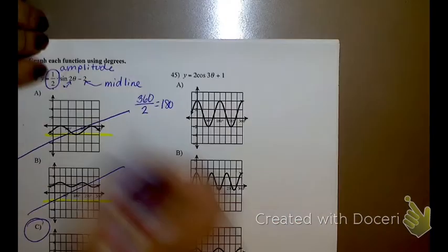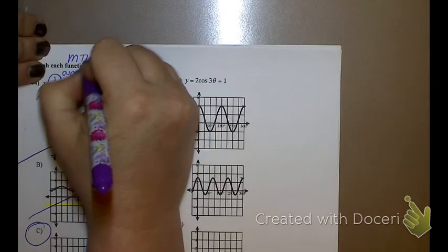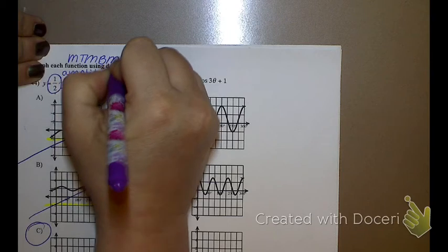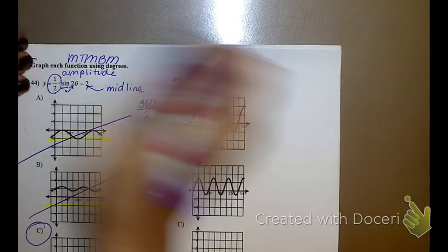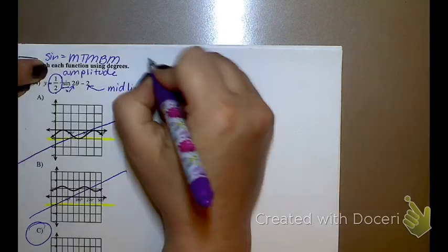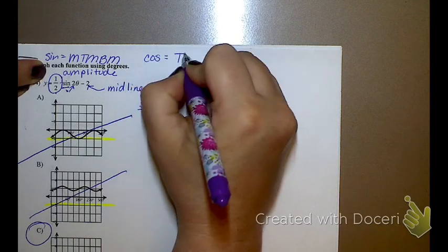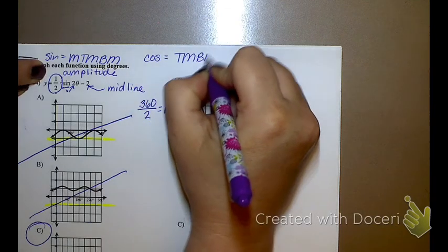Remember, our sine graphs are middle, top, middle, bottom, middle. What are our cosine graphs? Teenage Mutant Ninja Turtles? Top, middle, bottom, middle, top.